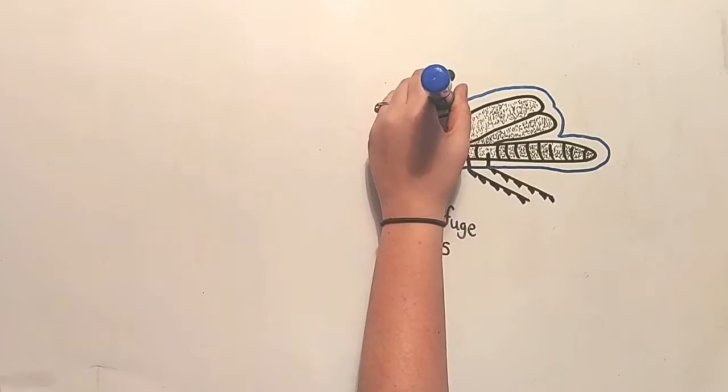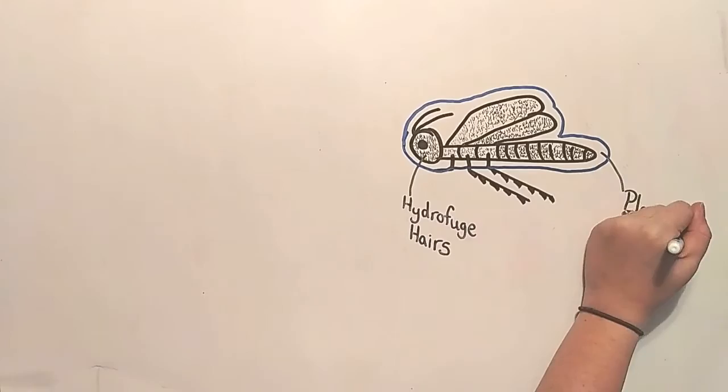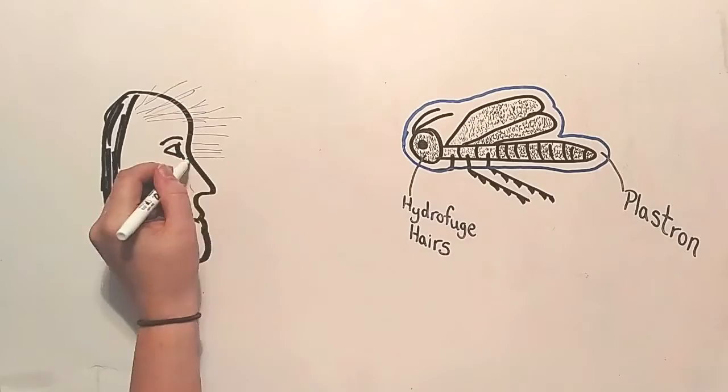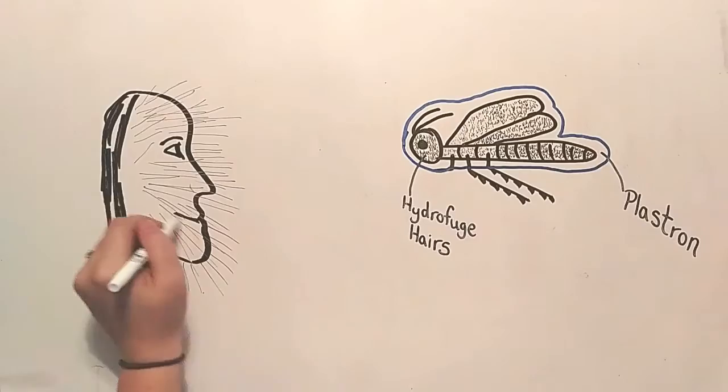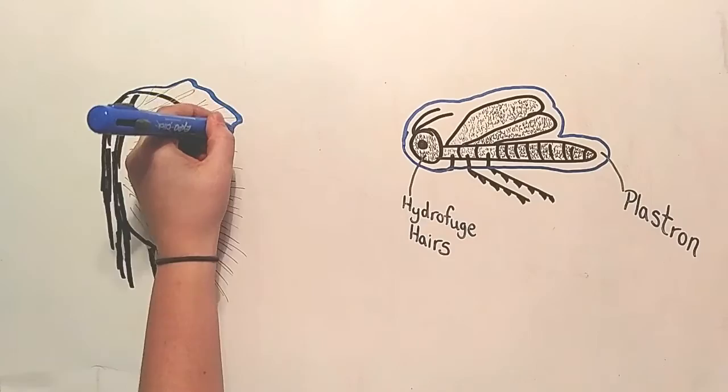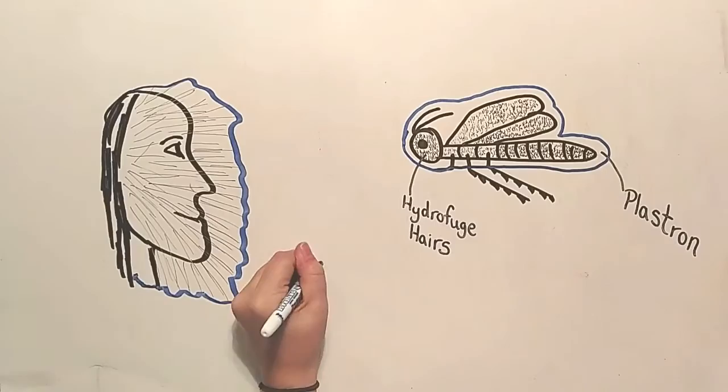She can breathe underwater using this air bubble. Let's say this another way. This is a person. This person has lots of long hairs on their face, and these hairs are waterproof. There are so many hairs that they are able to protect his face from water. There is dissolved oxygen occurring in the water. This air bubble will actually pull the oxygen out of the water and replenish itself.